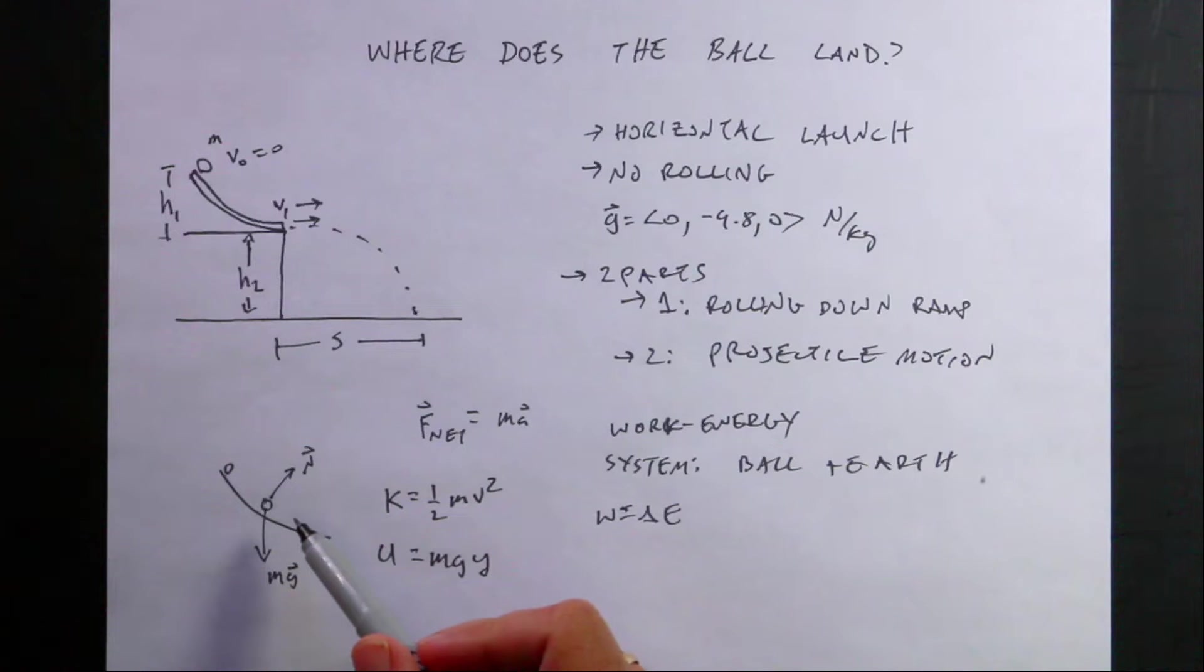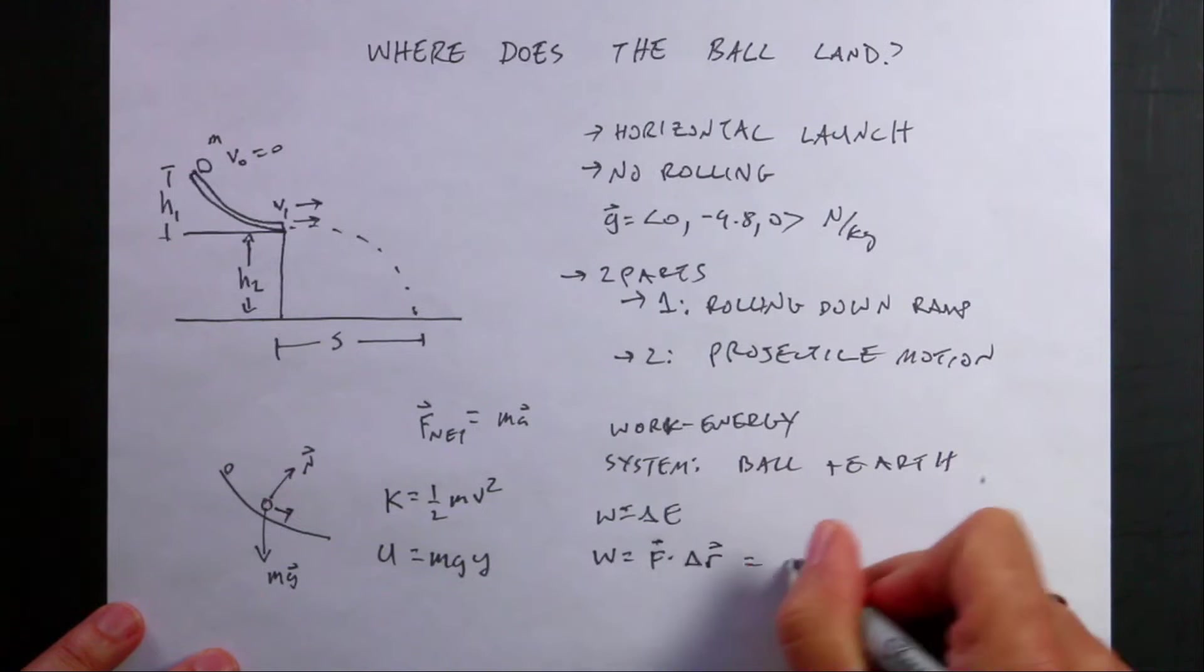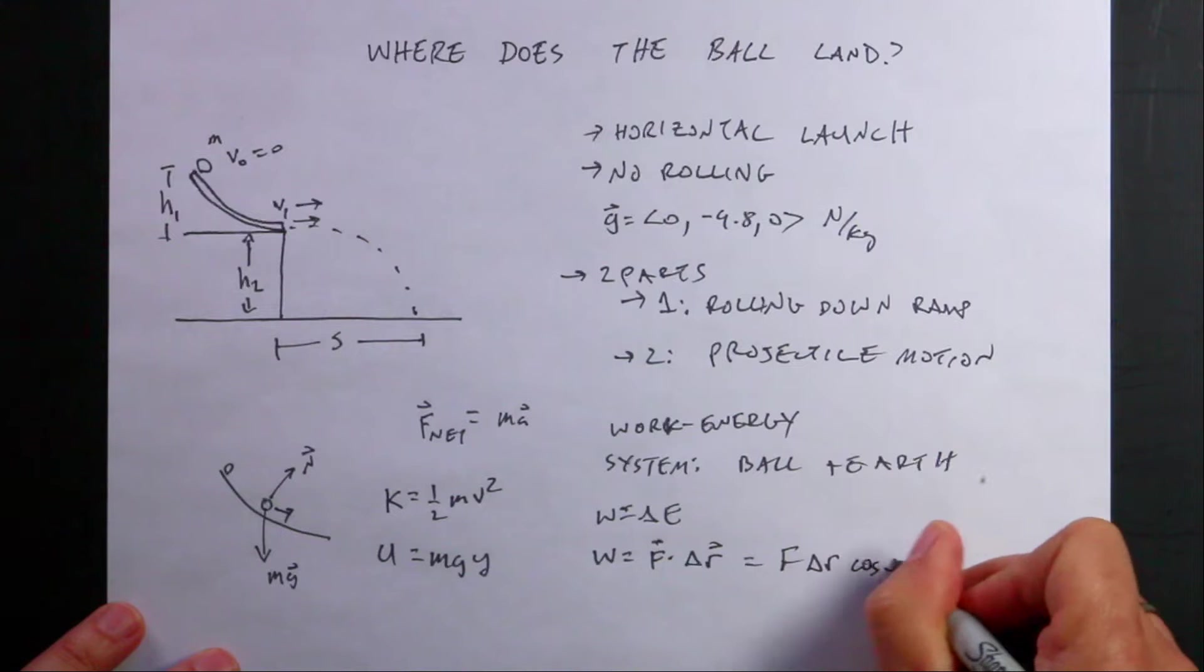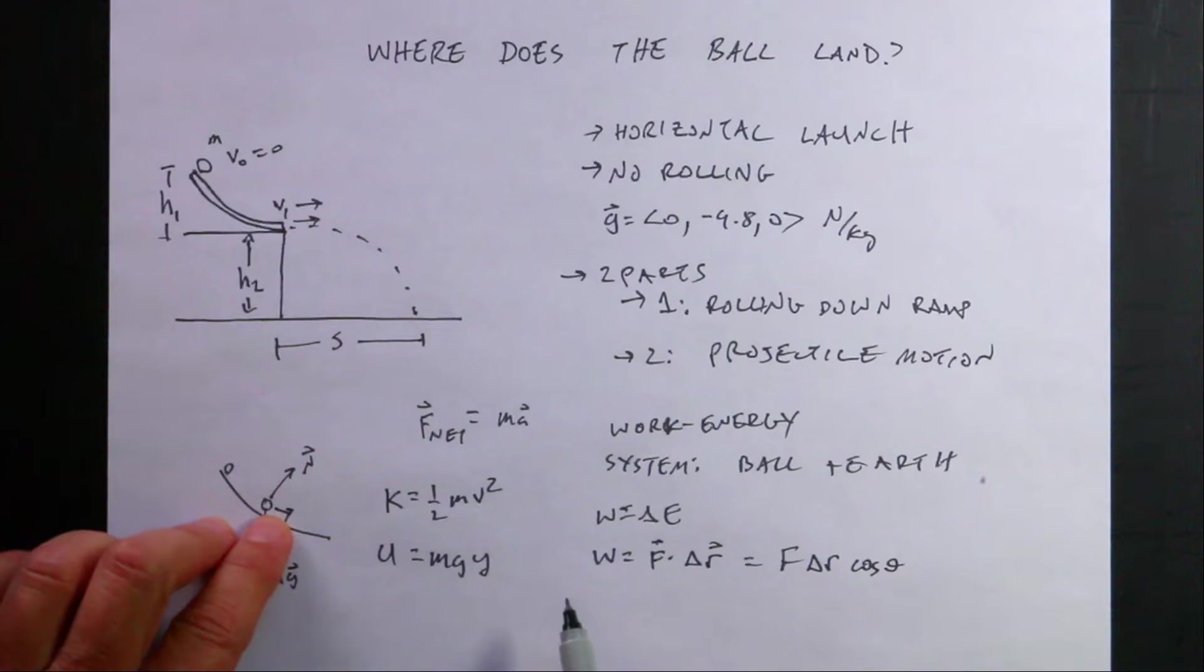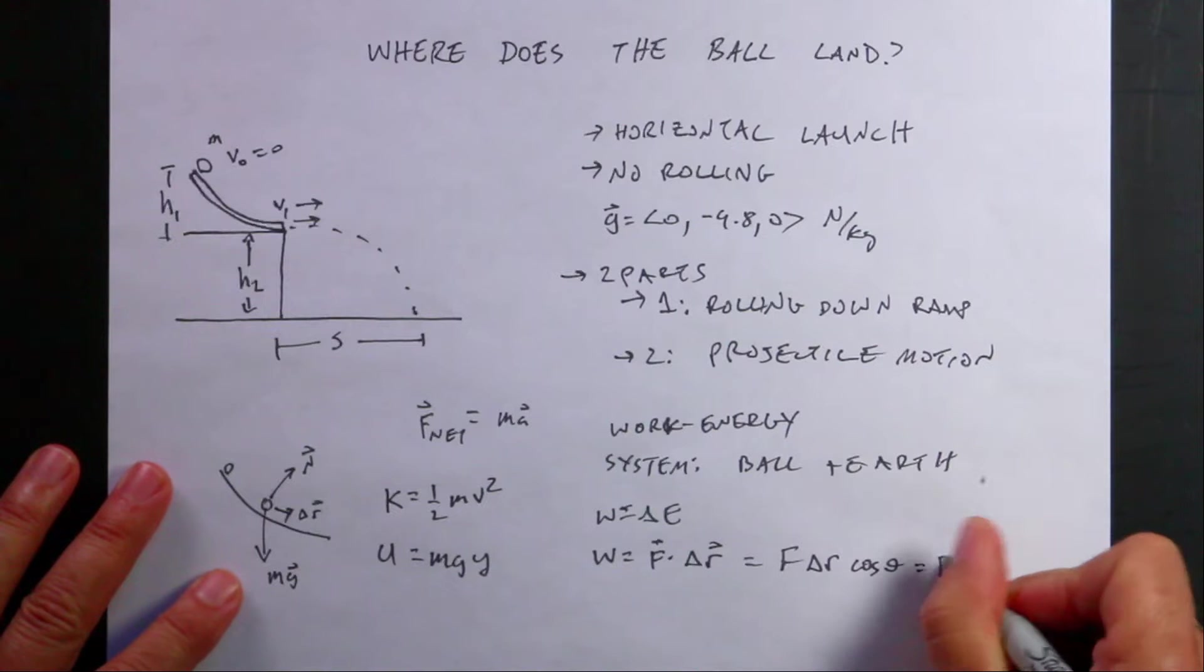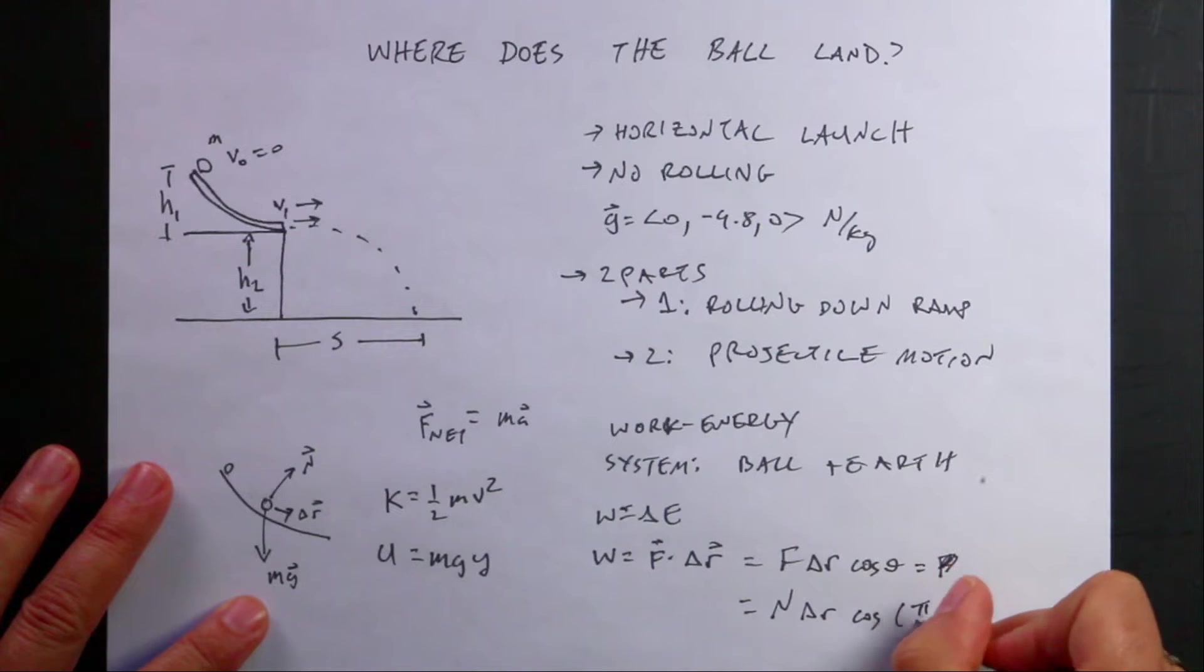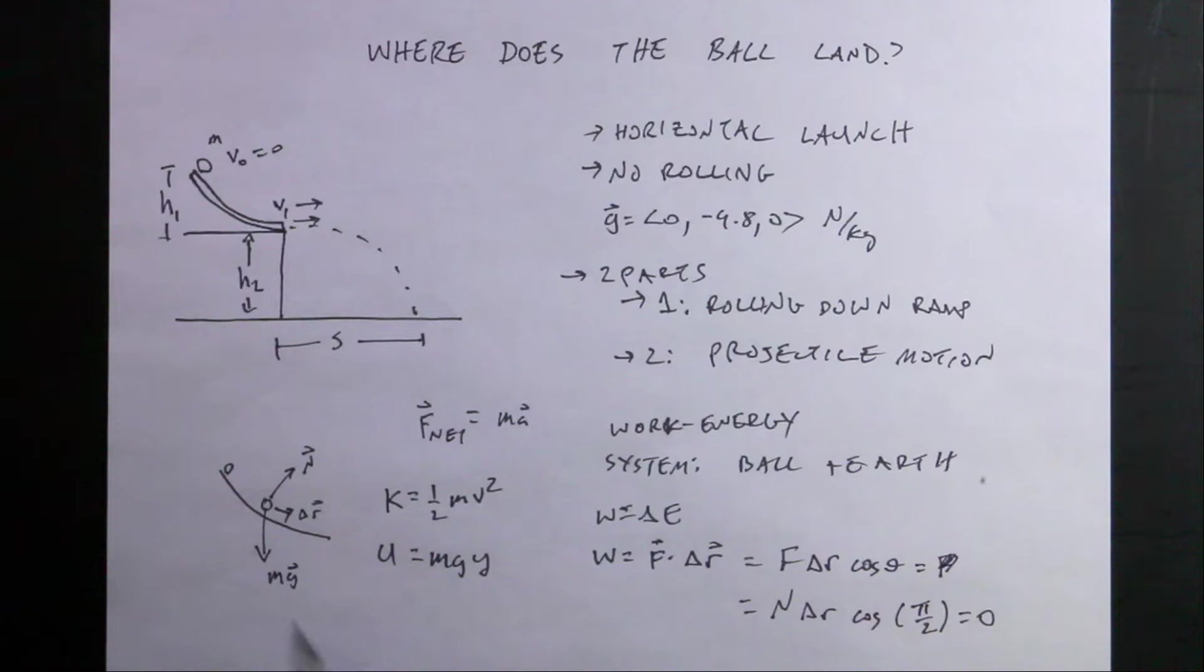Well, that leaves the track. Does the track do work on the system? And the answer is no. Because no matter which way the ball is moving, I define work as f dot delta r or f delta r cosine theta. No matter what point the ball is in this situation, the angle between delta r, the way it's moving, and the normal force is 90 degrees. So this is going to be n delta r cosine pi over 2 equals 0. So it's always going to be 0. So the normal force does no work on the system.